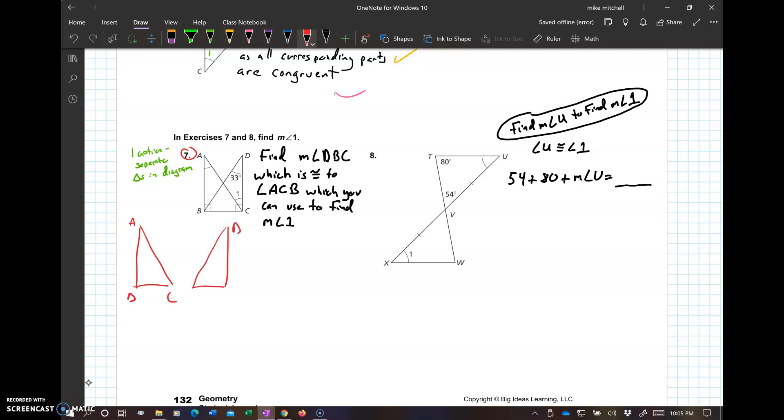ABC, DCB, you got a right angle. Sorry, I can't write. You're giving these congruent. Reflexive property makes those congruent.